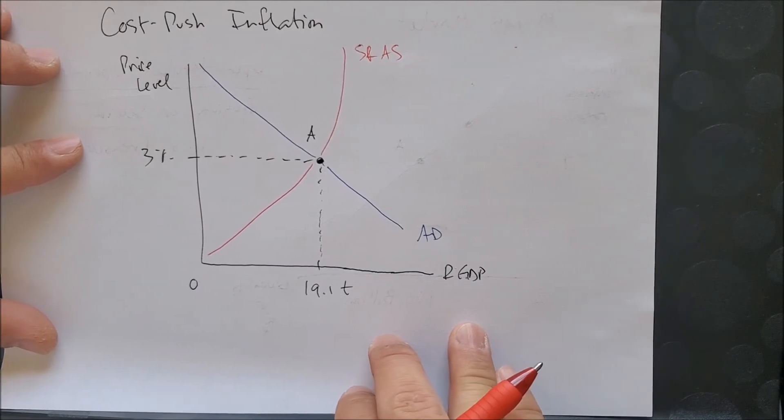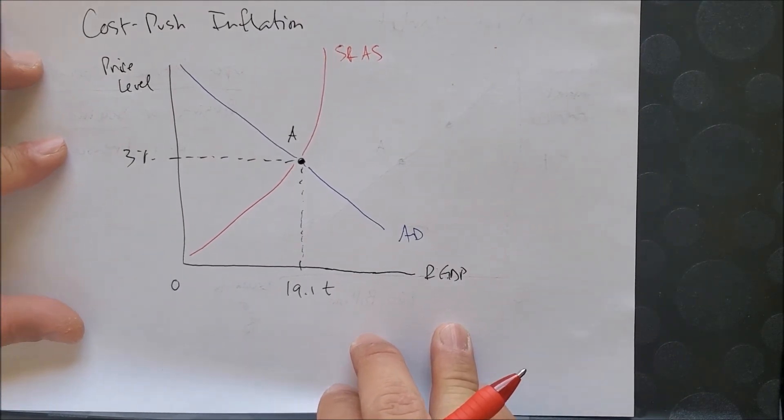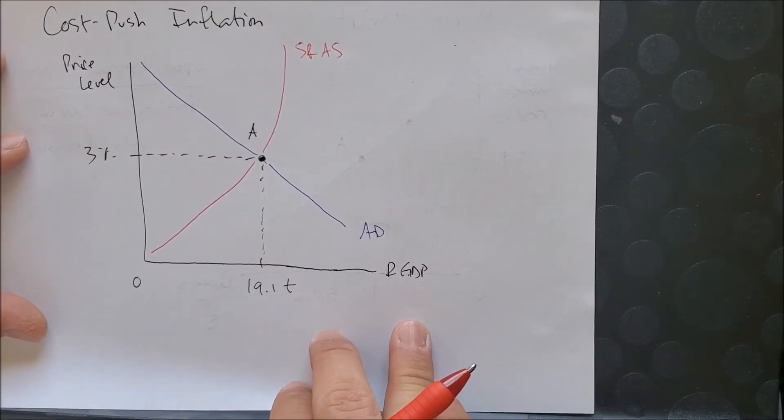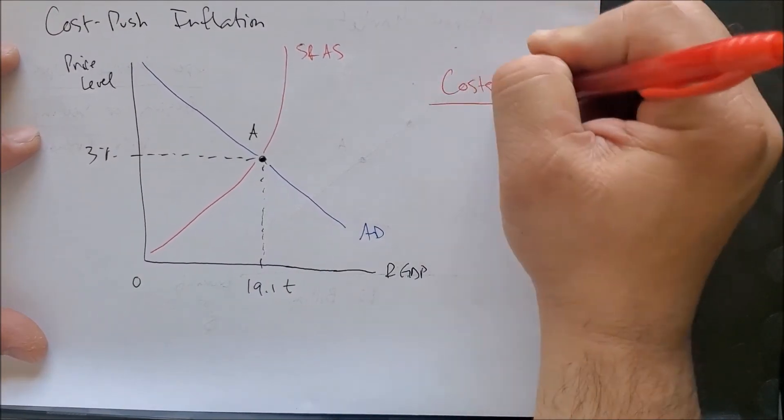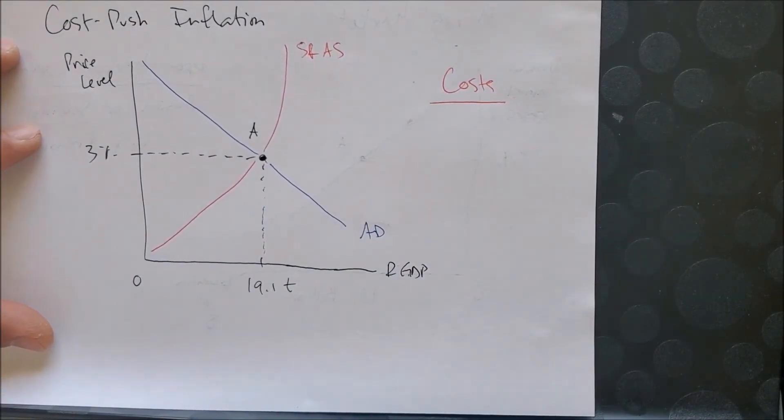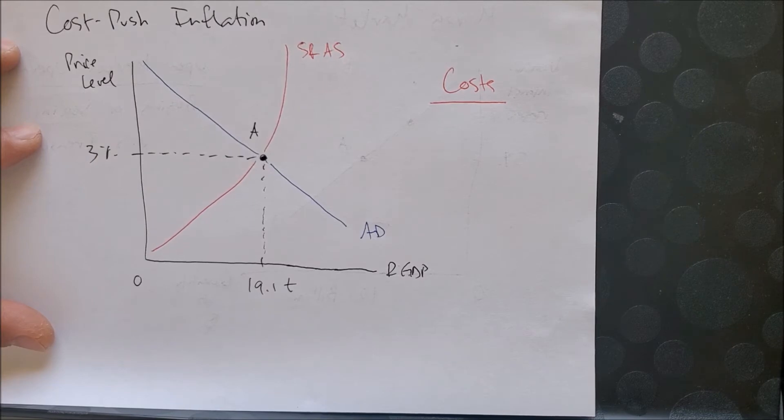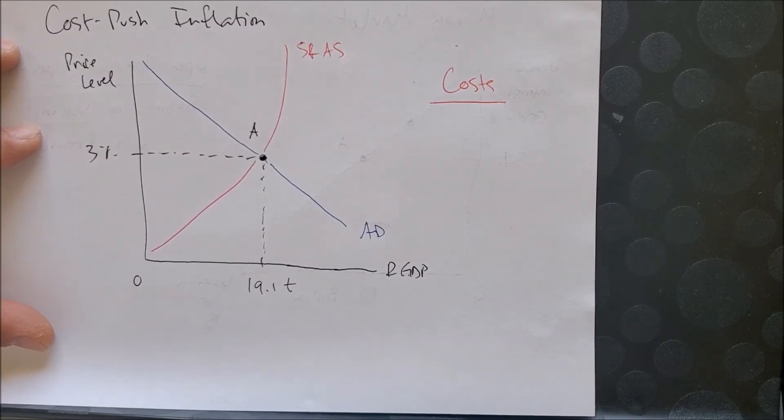If you look at some of the factors that affect the short-run AS, we can look at something called cost. One of the most fundamental types of cost is energy.